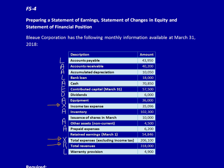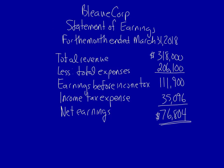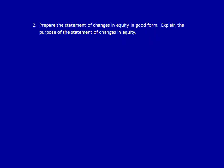Contributed capital at March 31st is the ending balance under contributed capital on the statement of changes in equity. Dividends and the issuance of shares in March would also show up on the statement. Finally, retained earnings at March 1st. In addition, we need a number from the statement of earnings — the net earnings of $76,804. We now have all the information to create the statement. Note that we're also supposed to explain the purpose of the statement, and we'll do that after we create it.